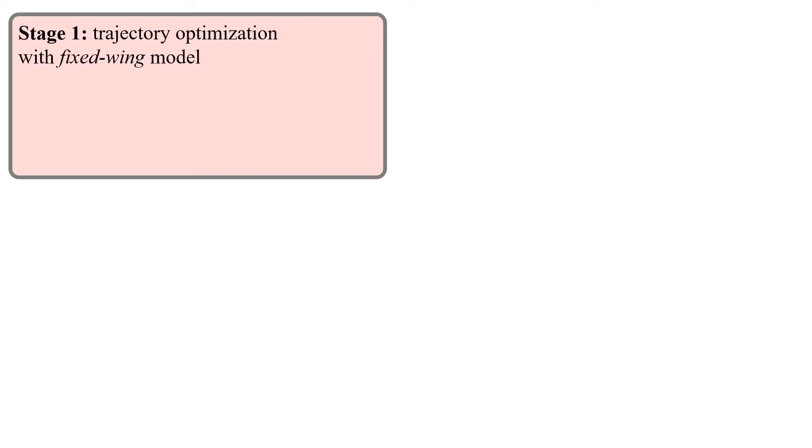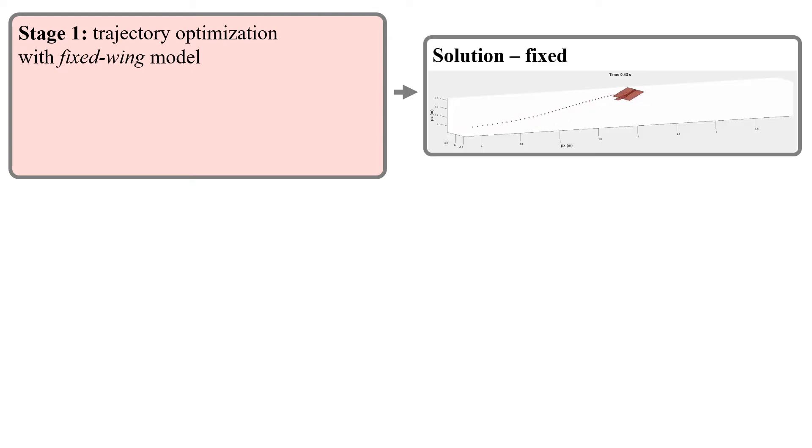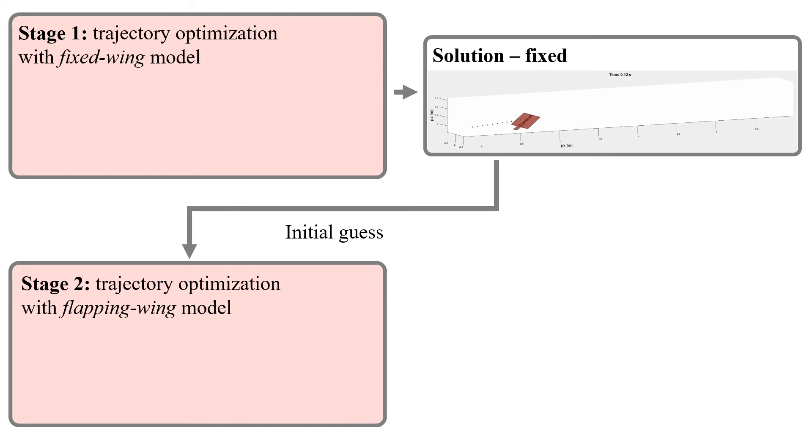We propose a two-stage trajectory planning approach. In the first stage, we use the fixed wing model that we trained to generate an initial solution to the problem. This is given as the initial guess to a second stage that uses the more complicated flapping wing model.